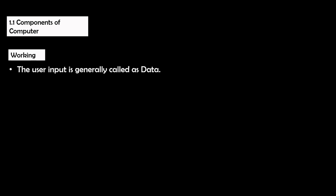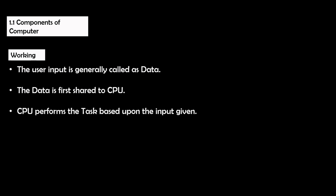Coming to the working of the components of a computer: the first step is that the user input is generally called data. Whatever input is given by the user is referred to as data. This data is first sent to the central processing unit, which performs various tasks, and from these tasks the output is generated.